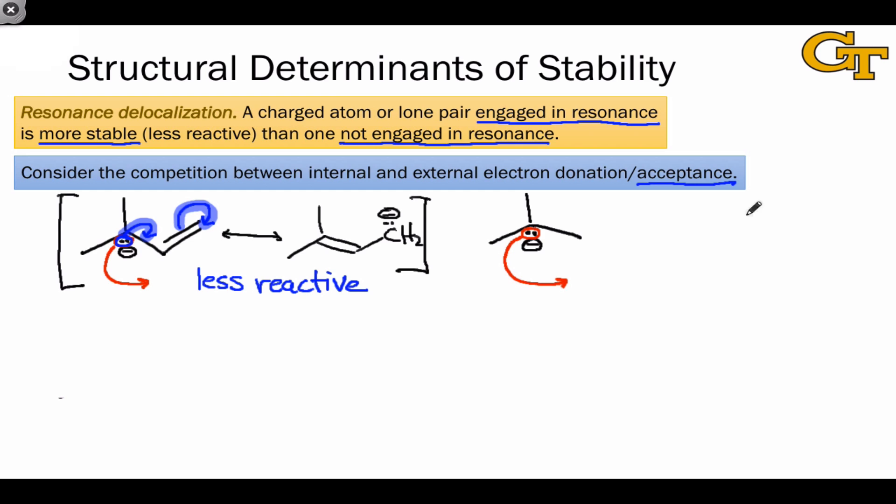We can compare, for example, a delocalized carbocation, which bears an alkene group adjacent to the positively charged carbon, with a localized carbocation lacking that structural feature. These molecules can act as electron sinks at the positively charged six-electron carbon atom. However, in the cation characterized by resonance, we can draw an alternative resonance form involving the donation of the pi electrons toward the carbocationic center.